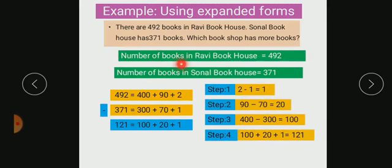Number of books in Ravi Book House is 492 and number of books in Sonal Book House is 371. Now, write this number in expanded form. That is 492 equals 400 plus 90 plus 2. 371, you should write this in expanded form. That is 300 plus 70 plus 1.